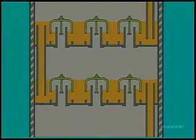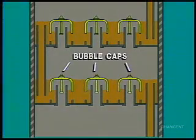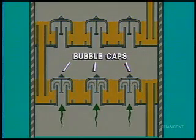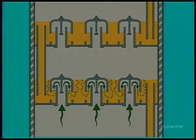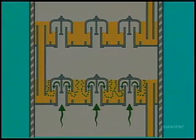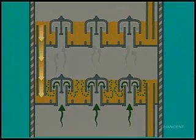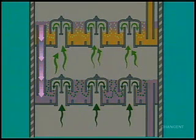Each tray has openings with bubble caps bolted over them. The upflowing gas is forced through these caps and bubbles evenly through the downflowing glycol. The gas gives up water and becomes drier as it passes upward through each succeeding tray. The glycol becomes more saturated with water as it flows downward over each tray.